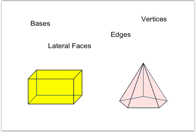Now let's go over vocabulary that will come up in this chapter. Bases are the congruent polygon faces of a solid. In a prism, we always have two parallel and congruent bases, whereas a pyramid has just one base.